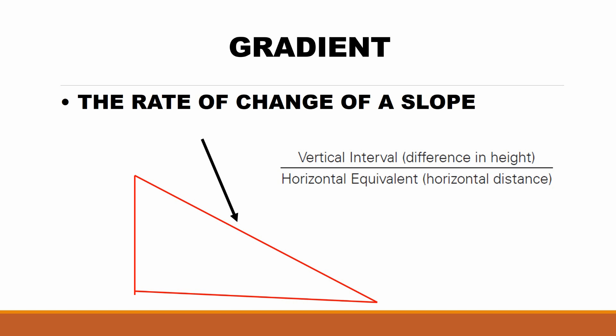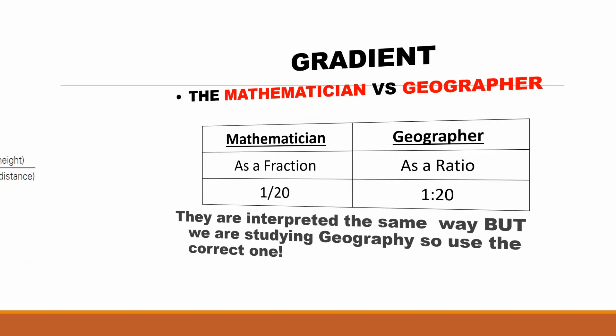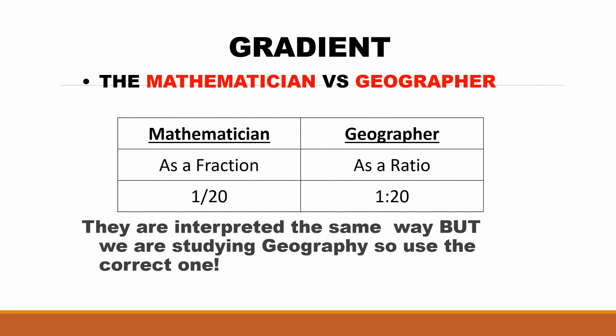So a gradient is the rate of change the slope has. And the formula to work it out is the vertical interval, or the difference in height, over the horizontal equivalent, or the horizontal distance. Although the calculation of gradient is exactly the same in math as it is in geography, we represent the numbers slightly differently. Mathematicians will represent a gradient as a fraction, whereas in geography we represent it as a ratio. So remember please, always represent the gradient as a ratio, not as a fraction, because you are studying geography and not math.